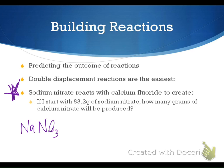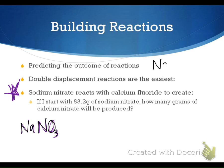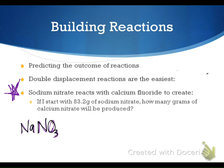Sodium nitrate is NaNO₃. Sodium is in group one, which means it has a plus one charge. Nitrate's charge is minus one. So this is a balanced formula. If we take sodium, which is plus one, and nitrate, which is minus one, and cross down those charges, it gives us ones on both. So there's our first reactant.